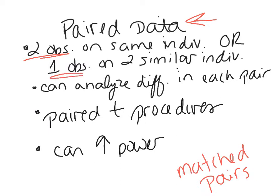What I can do with that information is analyze the differences in each pair. By using the same person or the same individuals, that eliminates other variables and subjectivity. Then I can analyze the differences in each of those pairs — basically I've run two tests on them. And if my conditions for inference are met, I can do what we call paired T procedures.